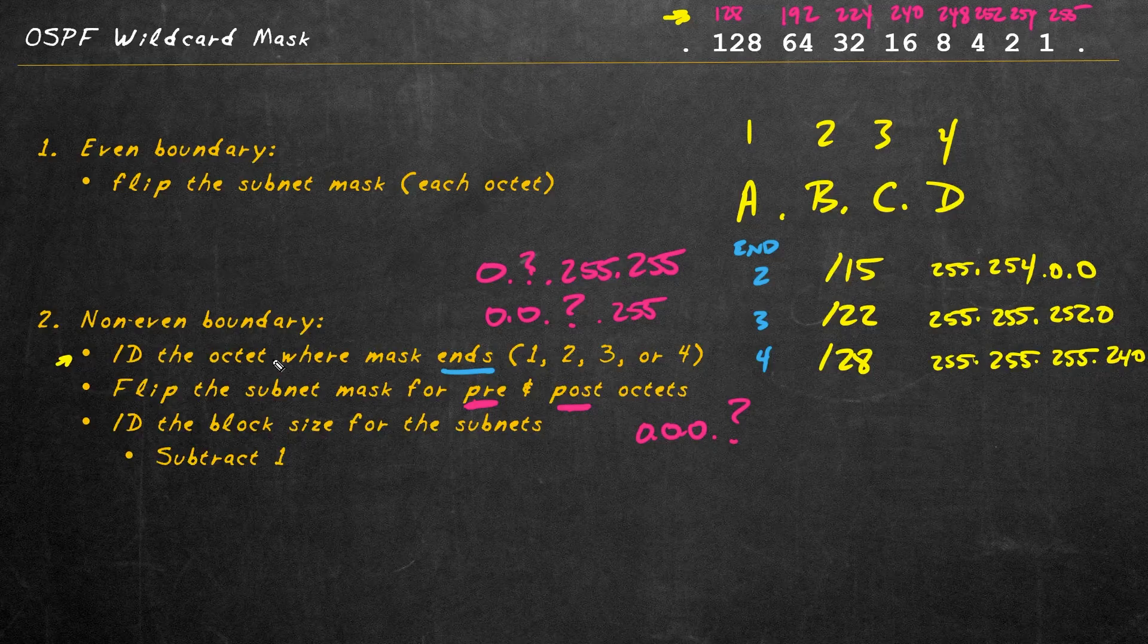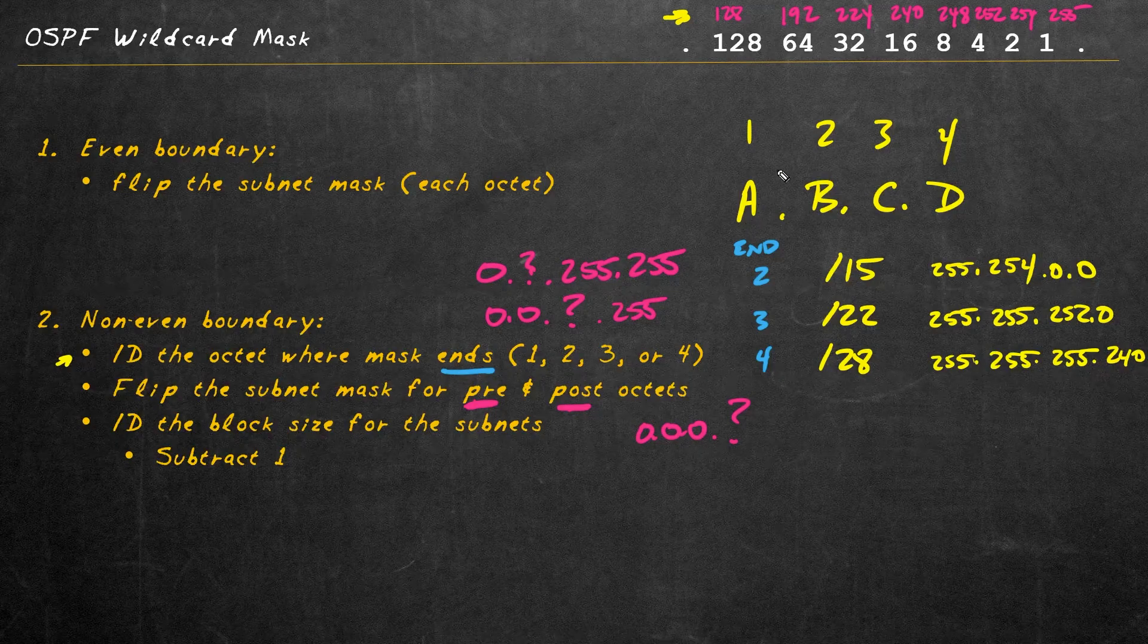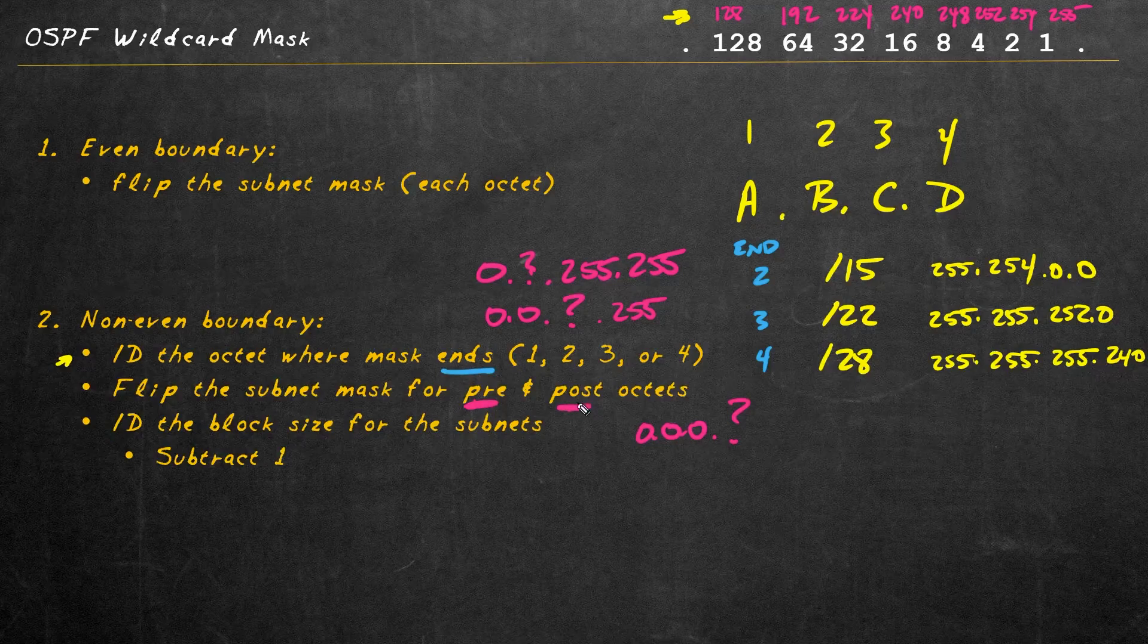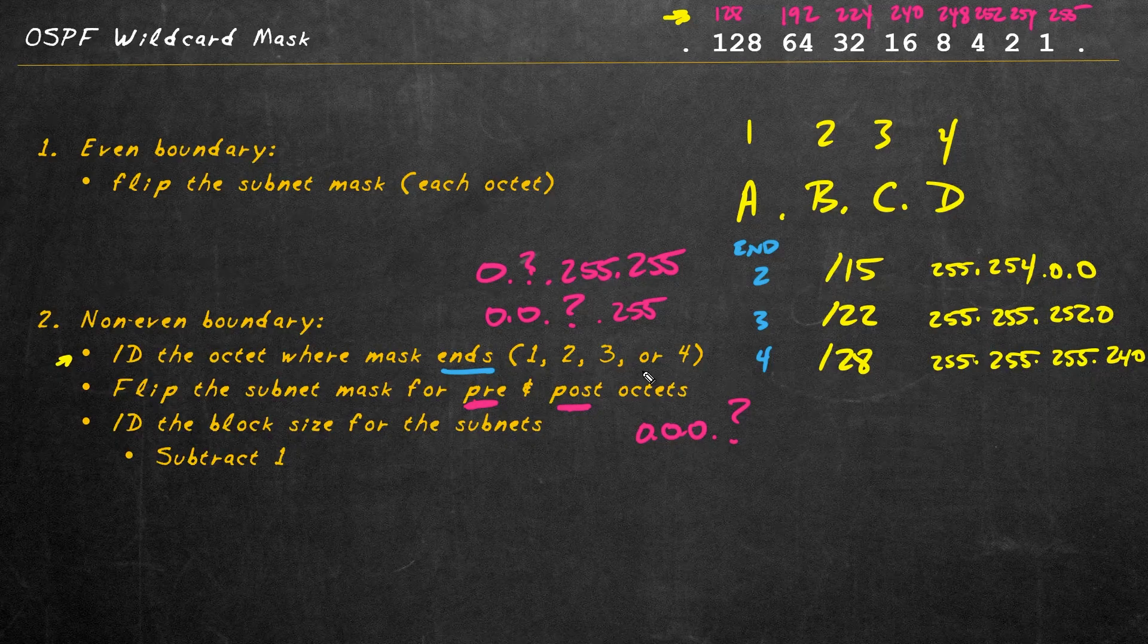So again, for a non-octet boundary, identify where the mask ends. Is it the first octet, second octet, third octet, or fourth octet, and then flip the pre and post octets. Each of those decimal numbers represents eight bits, and that's why they're often referred to as octets. Once we've done the flip for the pre and post octets, our last piece is to figure out what the value is going to be for that octet where we have the dividing line between the network on the left and the host on the right.